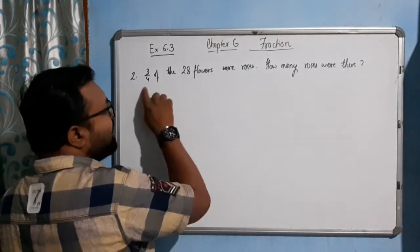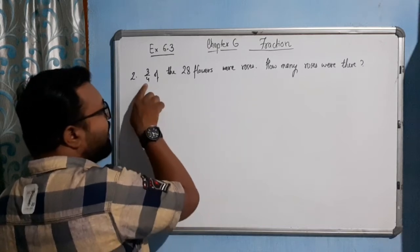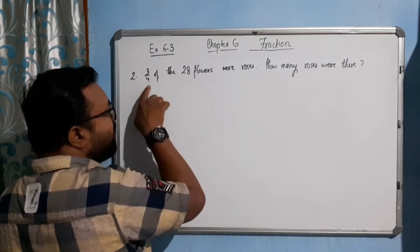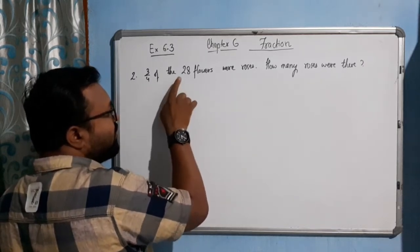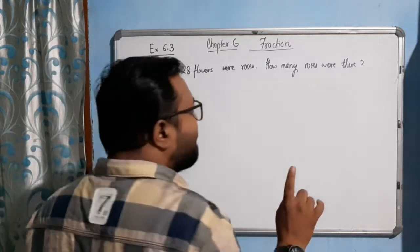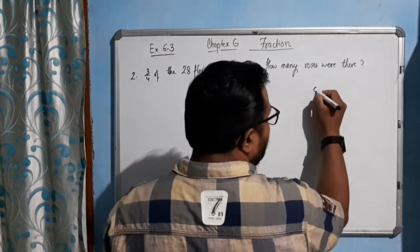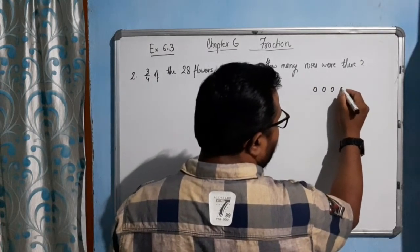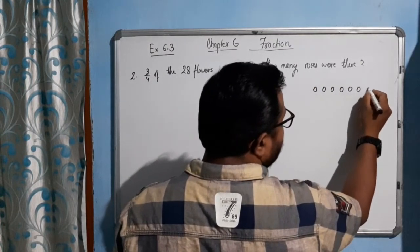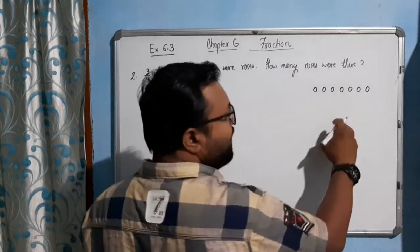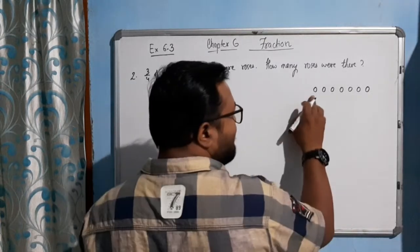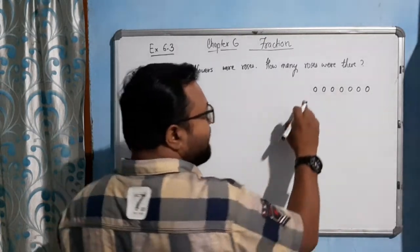If we do the calculation, seven times four is twenty-eight, so we require how many flowers in each packet? Seven flowers. Let me draw like this: one two three four five six seven. These are flowers, I am simply drawing this in a circle.